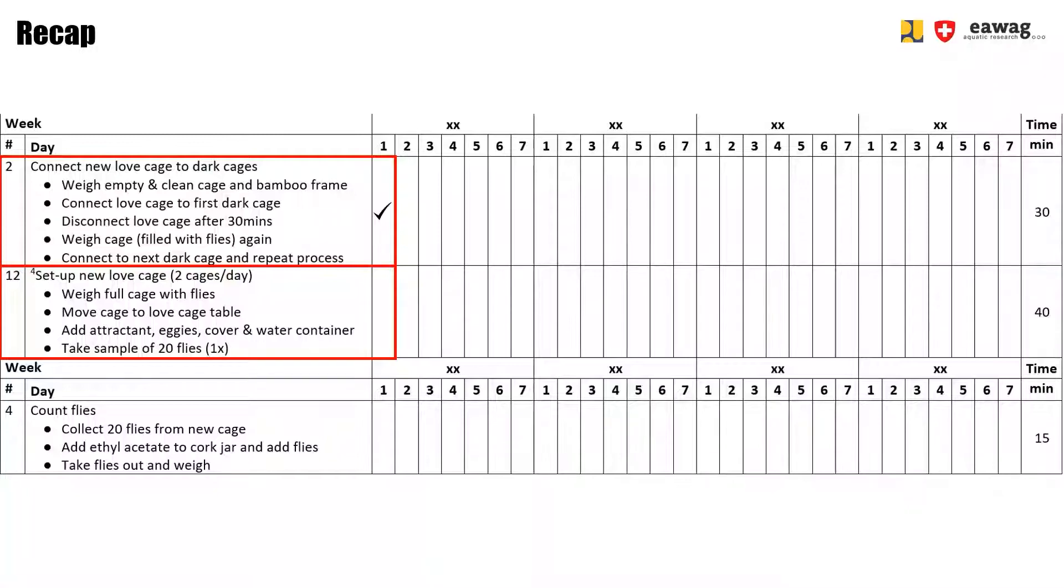Then we weighed the new loft cage for the last time after disconnecting it from the last dark cage and we set up the loft cage by adding the attractant, the egg media, the cover for shade and the water container, and we took a sample of 20 flies for analysis.